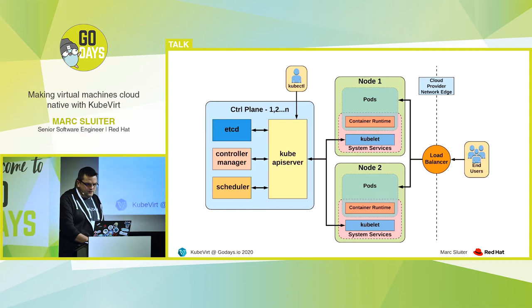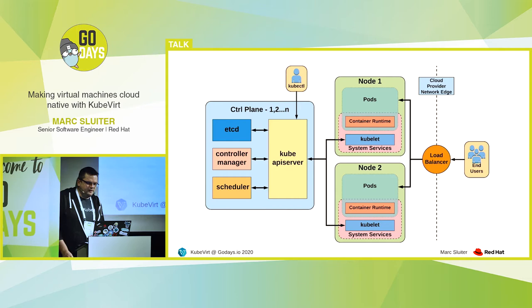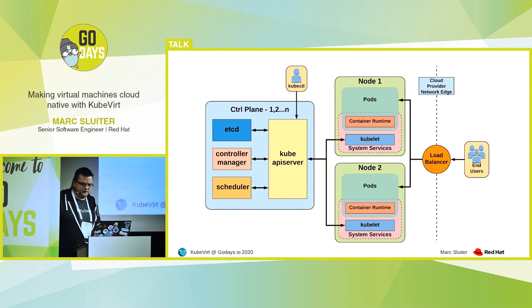So again, an image with an overview. On the left-hand side you see the so-called master or control plane, which can be one or more nodes for high availability. It runs a Kube API server, which is talking to the etcd database. The controller manager is talking to the API server. The scheduler is talking to the API server. And the kubelet, which is running on the worker nodes, is also talking to the API server and is starting the containers.